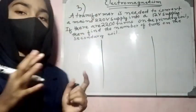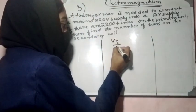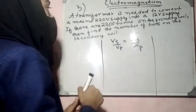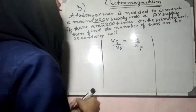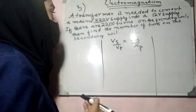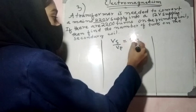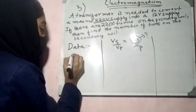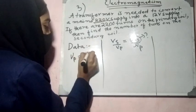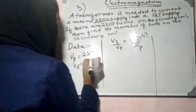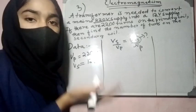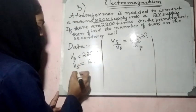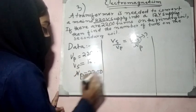The third problem is related to transformer which we have studied. The formula is V_S over V_P equals N_S over N_P. A transformer is needed to convert a 220 volt supply into a 12 volt supply. If there are 220 turns in the primary coil, then find the number of turns in the secondary coil. So what is the data? Primary voltage V_P is 220 volts, and V_S is 12 volts. N_P is 220 turns, and we need to find N_S.